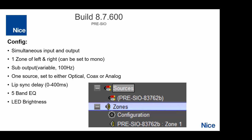Let's talk about the SIO. As we discussed, it adds both an auxiliary input and an auxiliary output. The output is one zone — it has left and right, which you can set to mono, but you can't split them. That zone does add the sub-output, which is variable. It's one source where you can select either optical, coaxial, or analog. Adding one gives you an extra input as well as an extra output. This piece supports lip sync delay, 5-band EQ, and LED brightness control.